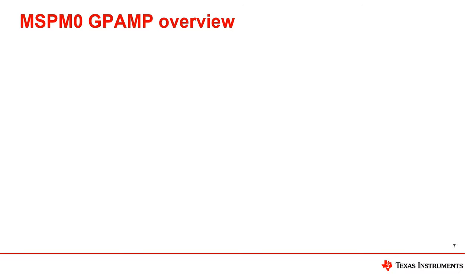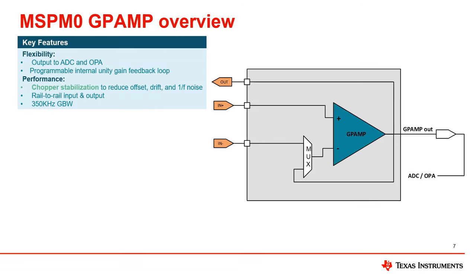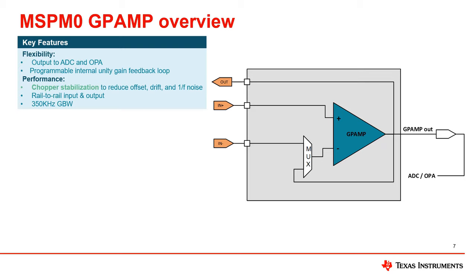Next, let's look at the features of the GPAMP. Compared to the OPA, the most immediate feeling is that the overall structure is less complex. In terms of flexibility, the output of the GPAMP can only be internally connected to the ADC and the OPA, and only the buffer feature is available internally. In terms of performance, it also has a chopper function, supports rail-to-rail inputs and outputs, and has a gain bandwidth of 320 kHz. Users can use it as a replacement for external op amps or as a buffer for ADC or OPA input signals.